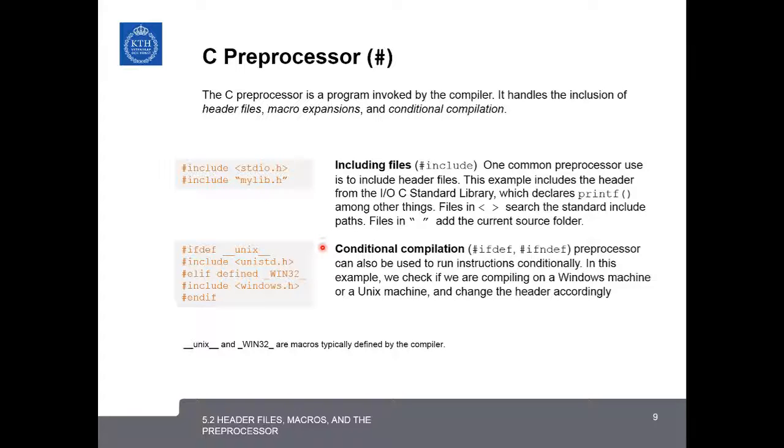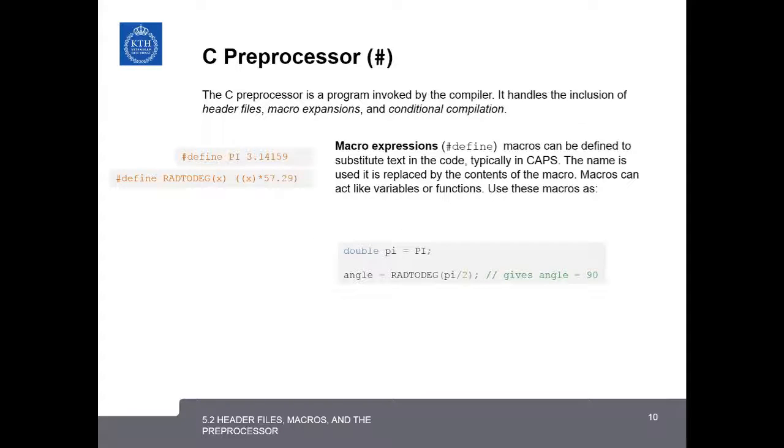The C preprocessor is also commonly used for conditional compilation, and in this context, it uses the keywords ifdef and ifndef, which mean if something is defined and if something is not defined. Then the preprocessor can also run the instructions conditionally. For example, here, if it's checking if this is a Unix machine, and if it is, it will include unistd.h. Otherwise, if it's a Win32 machine, it will include windows.h. Underscore Unix and underscore Win32 are macros that are typically defined by the compiler.